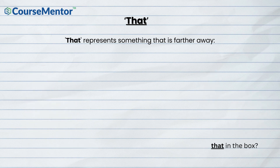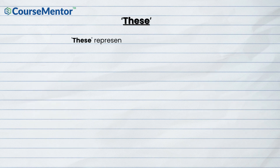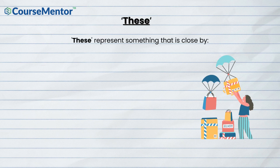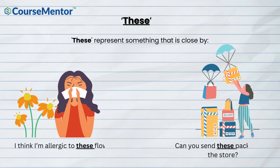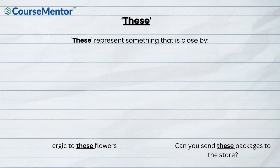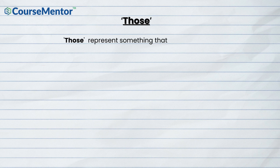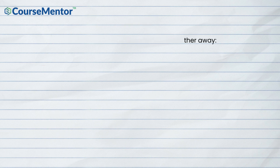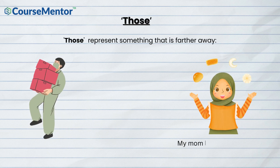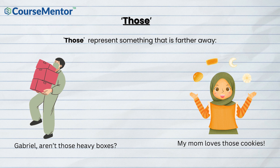'These' represents something that is close by. Example: 'I think I'm allergic to these flowers.' Another example: 'Can you send these packages to the store?'